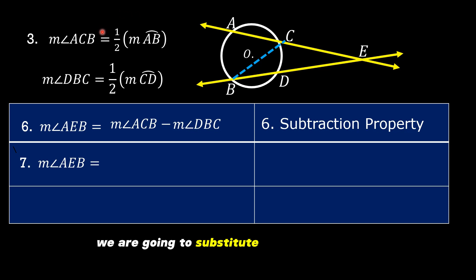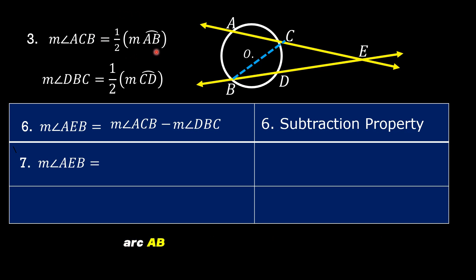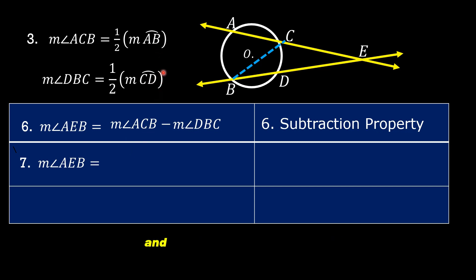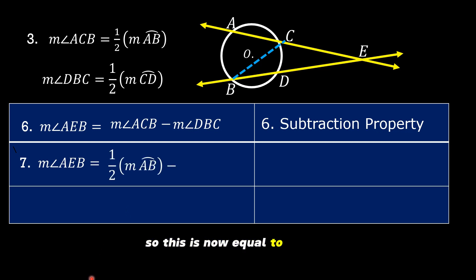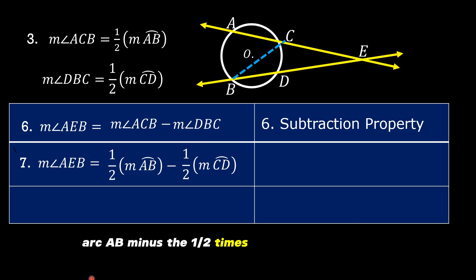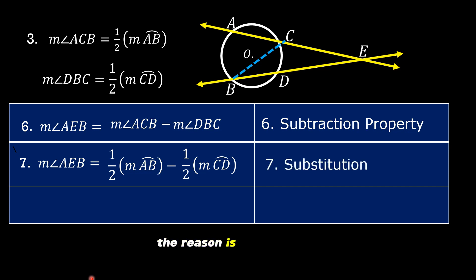We are going to substitute one-half the measure of arc AB for the measure of angle ACB, and one-half the measure of arc CD for the measure of angle DBC. So this is now equal to one-half times the measure of arc AB minus one-half times the measure of arc CD. The reason is substitution.